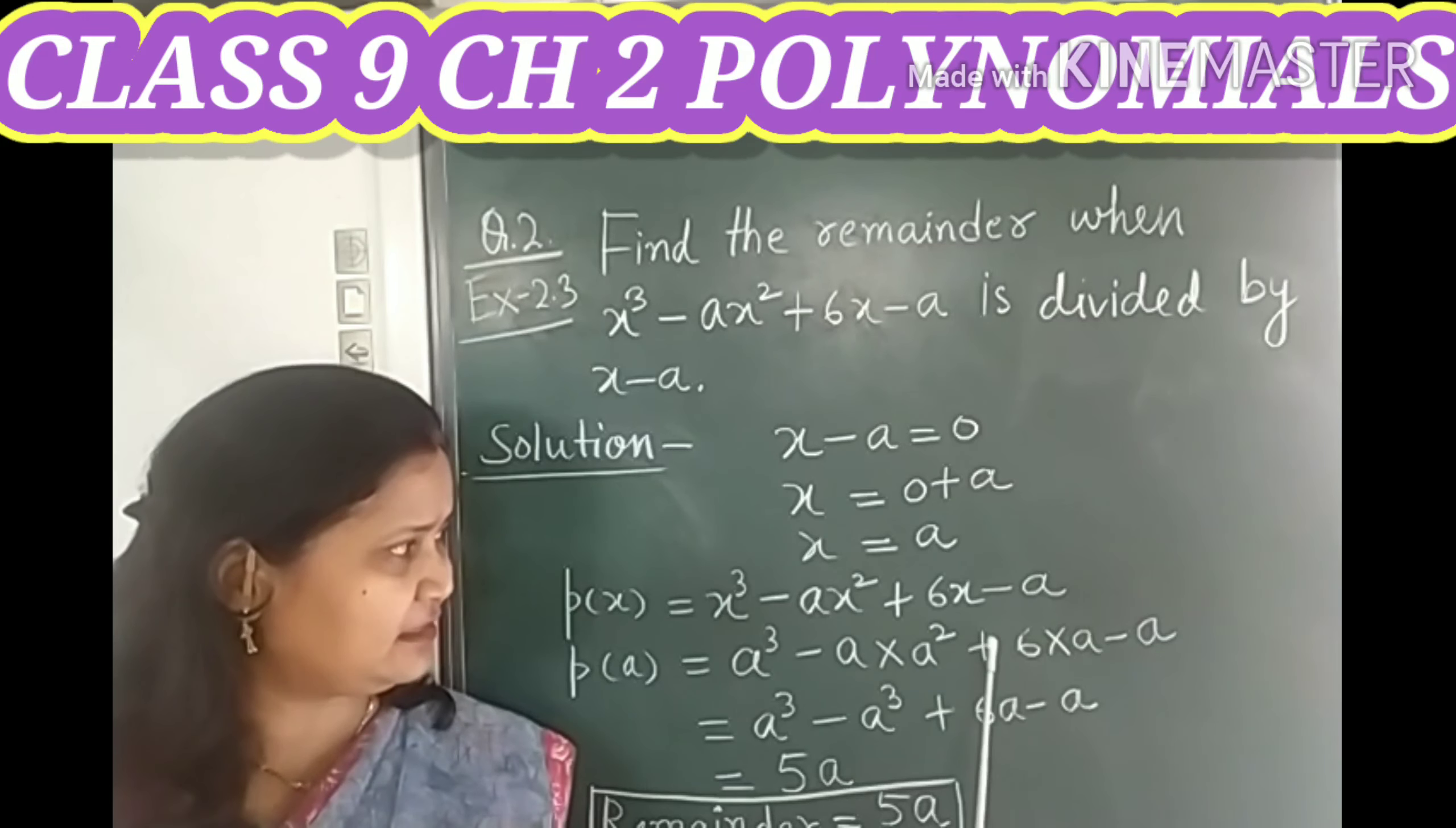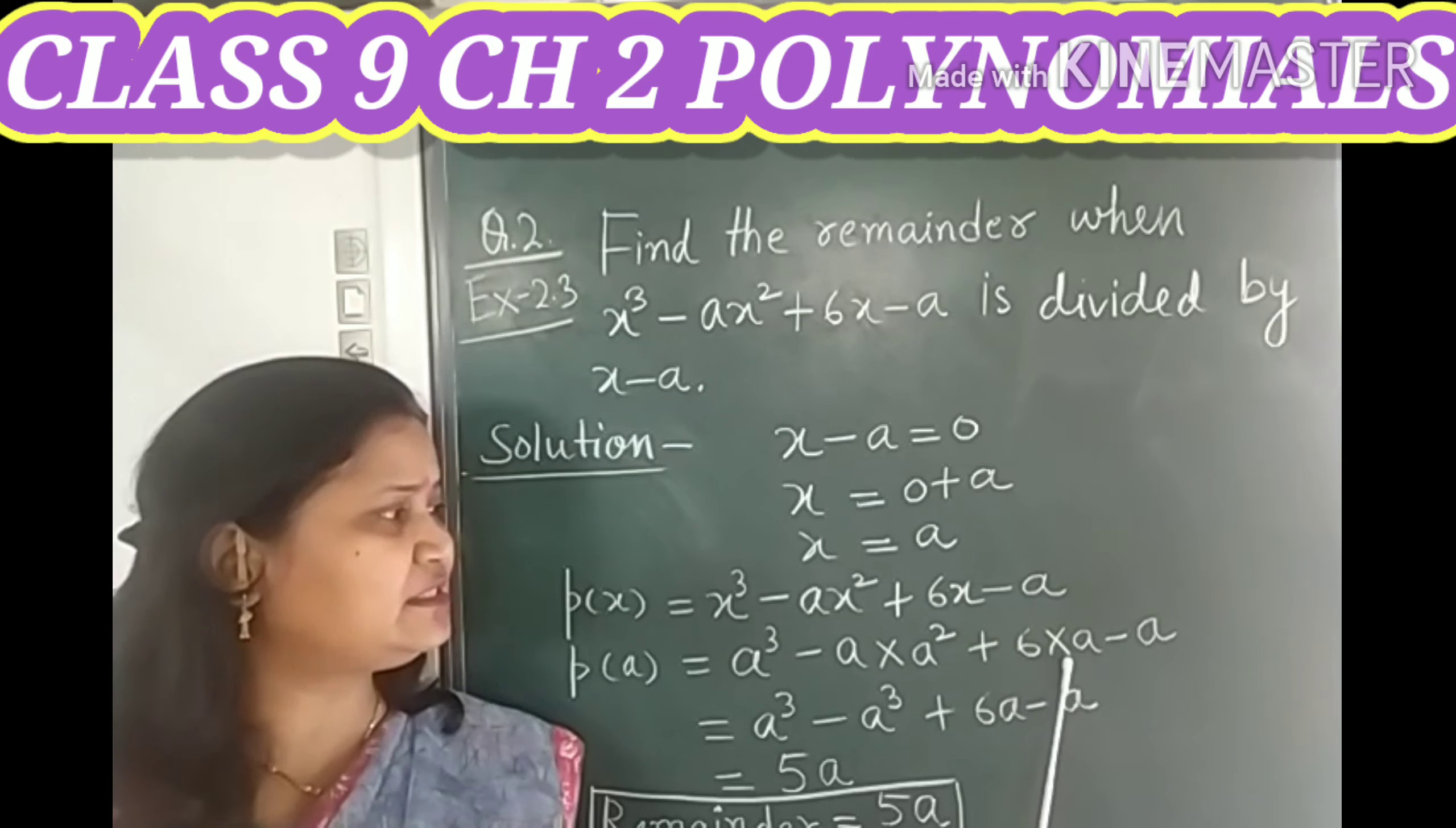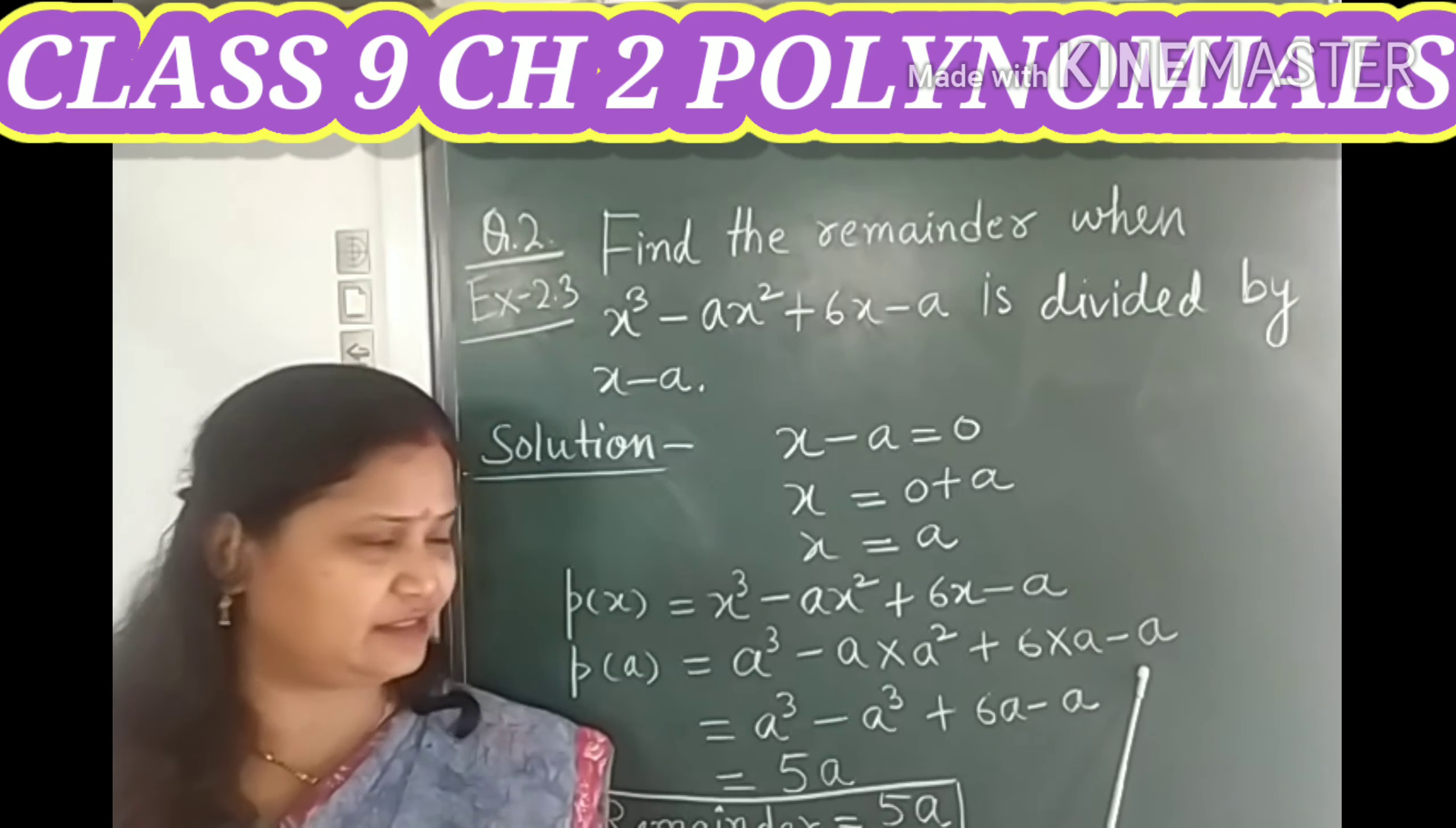Now plus 6, you can write it as it is and this x you can substitute a in place of this x. So it becomes 6 into a and this minus a you can write it as it is.